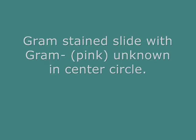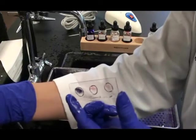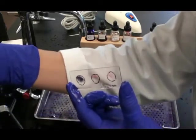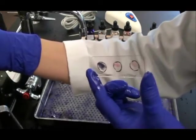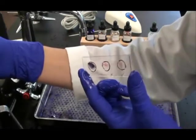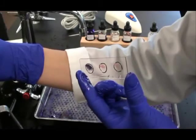The slide I just prepared has a Gram-negative unknown. I see my positive control on the left, my negative control on the right, and my unknown in the center is pink like my negative control.